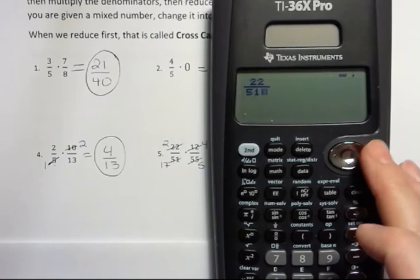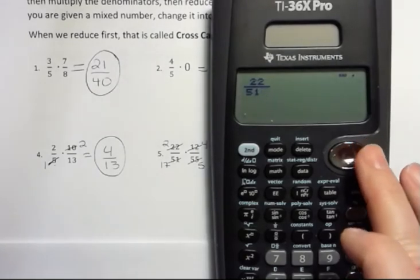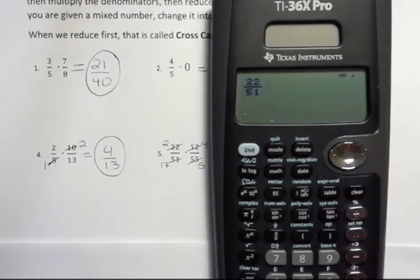I'm going to do 22 over 51, and then I'm going to arrow to the right using this silver button up here to get out of that. And then I want to times that by 12, 55. 12 over 55. And then I'm going to arrow out of that. I probably don't have to arrow out of that at the end. Then hit enter.